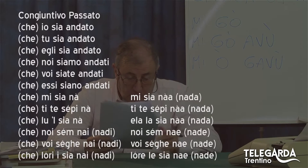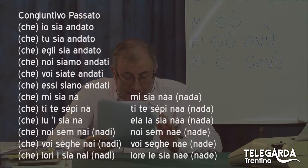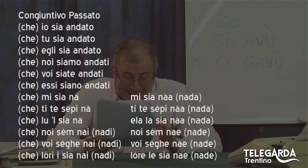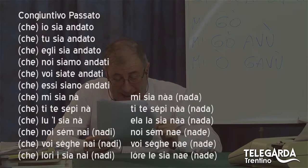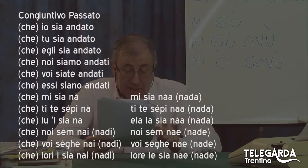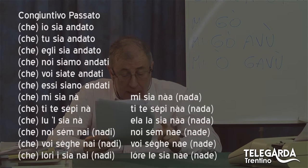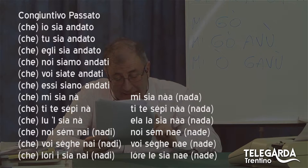Andiamo al congiuntivo passato: che io sia andato, che tu sia andato, eccetera. Che mi sia na, che ti te seppi na, che lul sia na, che noi sem nai o che noi sem nadi, che voi seghe nadi, che lori sia nai o che lori i sia nadi.